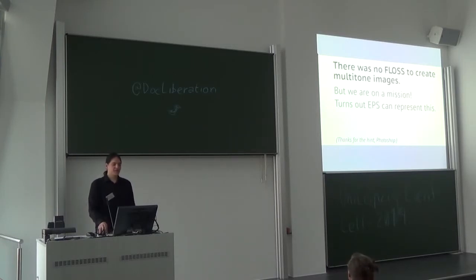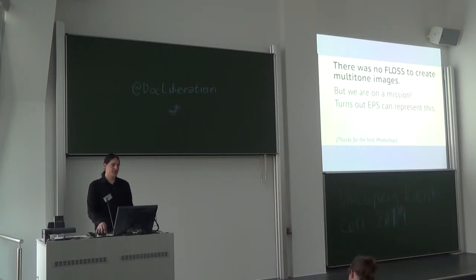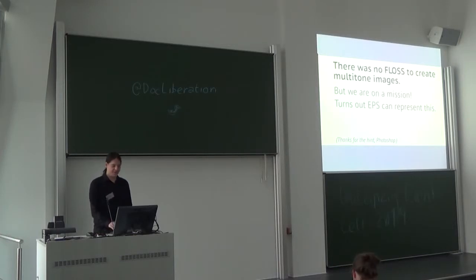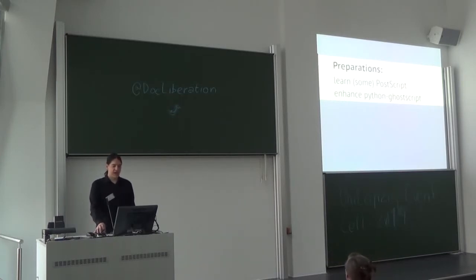The best known tool to create multitones is the duotone mode in Adobe Photoshop, which lets you export multitone images as EPS files. EPS stands for Encapsulated PostScript — essentially PostScript with some comments in it. PostScript is a programming language by Adobe, and it's documented very well. A PostScript file can be opened in any text editor, and there is a very good open source interpreter for PostScript called Ghostscript. I started by learning enough PostScript to understand what Photoshop was exporting, and then created a minimalistic multitone PostScript template myself.